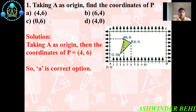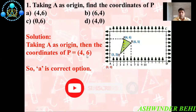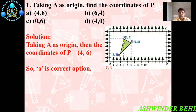Question number one: taking A as the origin, find the coordinate of P. The four options are: A) (4, 6), B) (6, 4), C) (0, 6), D) (4, 0). Now for the solution — if you are taking A as the origin, then the coordinate of P is (4, 6). With the help of this picture, you can easily identify P as (4, 6). So A is the correct option.